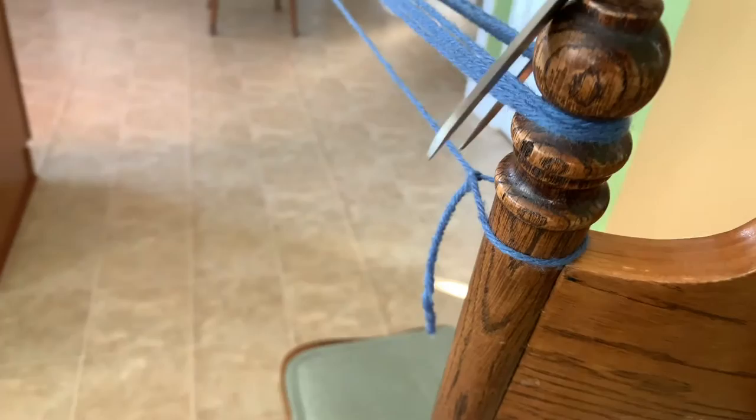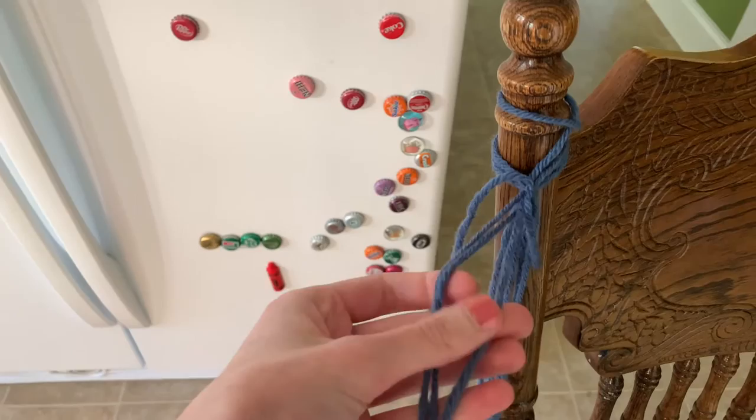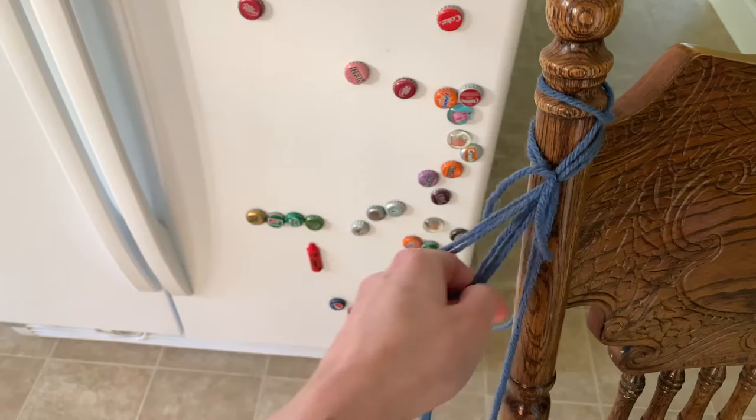Then I'm going to go down to the first end and I'm going to cut all the loops and then I'm also going to undo the little slip knot that I started with. Then I'm going to separate my nine strands into three sections each with three strands and these I'm going to then braid together.